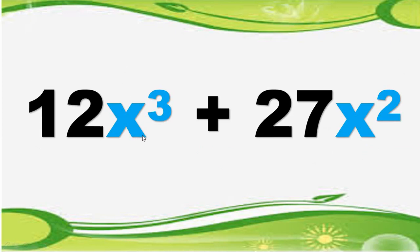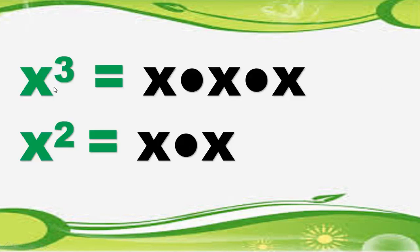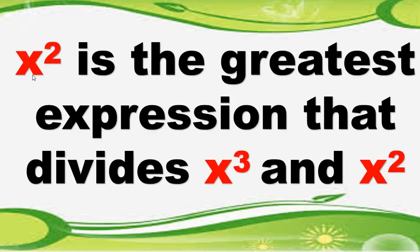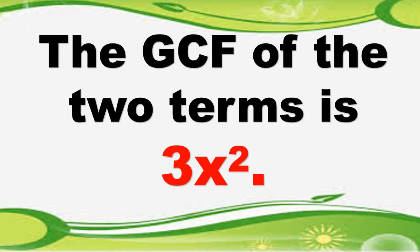Let's go back again with the problem. But this time, let's focus on x cubed and x squared, which is the literal coefficient of 12 and 27. In expanded form, x cubed is equal to x times x times x. x squared is equal to x times x. Now take a look: they have here two of the same factors. And multiplying this together, x times x is equal to x squared. So therefore, x squared is the greatest expression that divides x cubed and x squared, or just simply get the expression with the lowest exponent, and that is x squared. So the greatest common factor of the two terms is 3x squared.